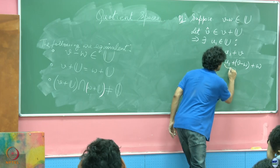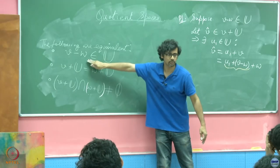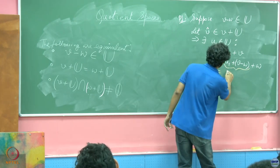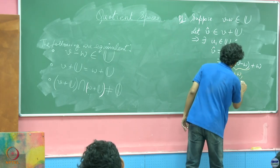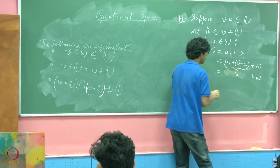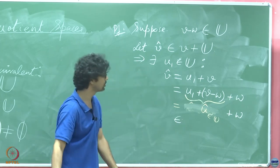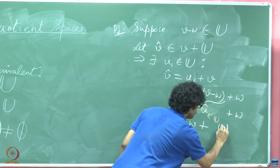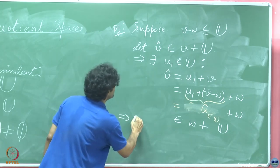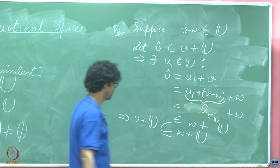How do we go about proving this? When you have these equivalent proofs, show that this implies this, this implies this and you are done. It is a cycle of reasoning. First, suppose V minus W belongs to U. Let V hat belong to V plus U, implies there exists U1 in U such that V hat equals U1 plus V. If something belongs to this, it means that there is some object inside the subspace U which when added to this vector V results in the vector inside that set.